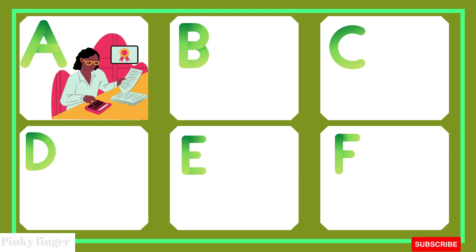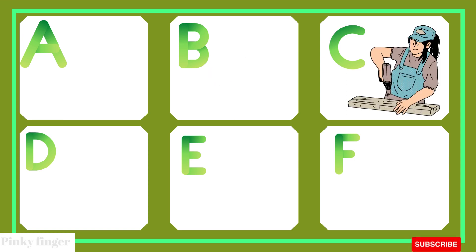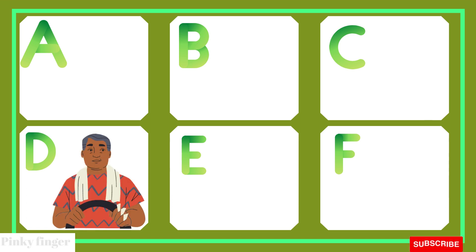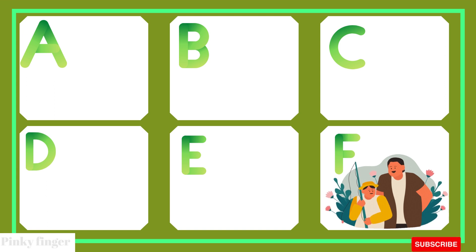A is for accountant. B is for businessman. C is for carpenter. D is for driver. E is for engineer. F is for fisherman.